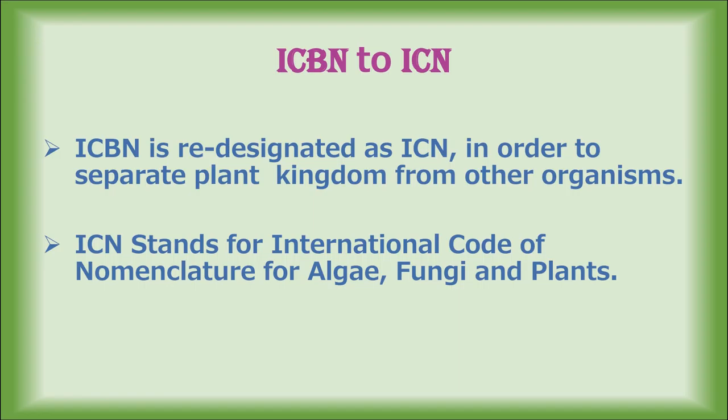ICBN stands for International Code for Botanical Nomenclature. Assigning a name for a plant is known as nomenclature, and this is based on the rules and recommendations of the International Code for Botanical Nomenclature. ICN deals with the naming of existing or living species of organisms. The elementary rules for naming of a plant were first proposed by Carlos Linnaeus in 1751, written in his Philosophia Botanica. In 1813, a detailed set of rules was proposed by A.P. de Candolle regarding plant nomenclature, written in his famous book Théorie Élémentaire de la Botanique.